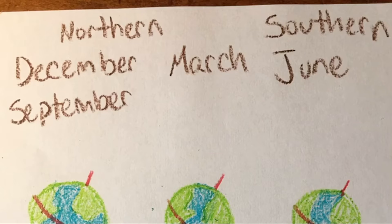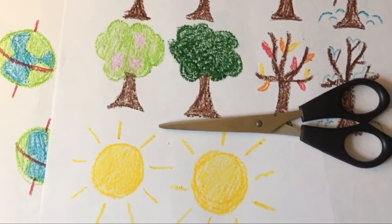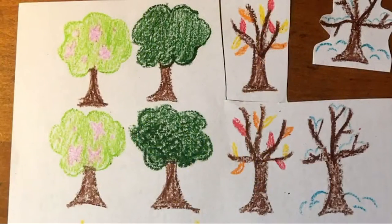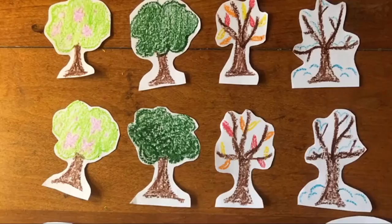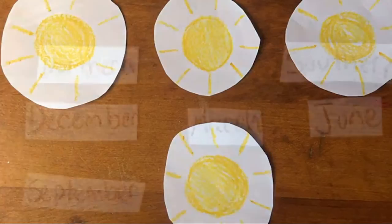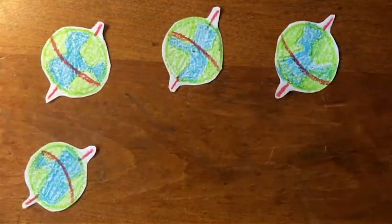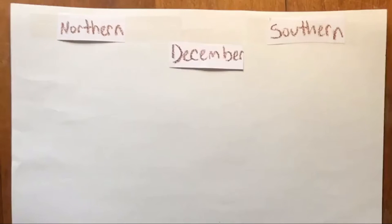Then we need to make labels for the northern and southern hemispheres as well as labels for December, March, June, and September. Now it is time to start cutting things out. And lastly we begin to tape things down where they are supposed to go. Begin this step by taping down the northern and southern hemispheres. Then we tape down the labels for the months and leave room in between for the rest of our items.